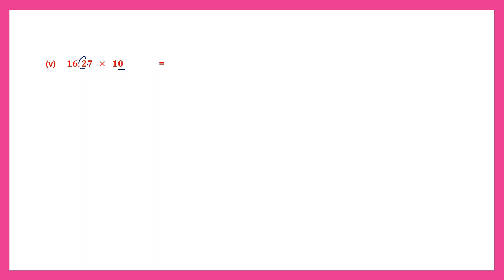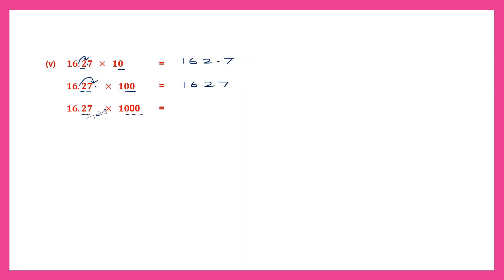Question 5: 16.27 into 10. One zero, point moves one place to the right — giving 162.7. Multiply by 100: two zeros, point moves two places — giving 1,627. Multiply by 1000: three zeros, point moves three places — giving 16,270.